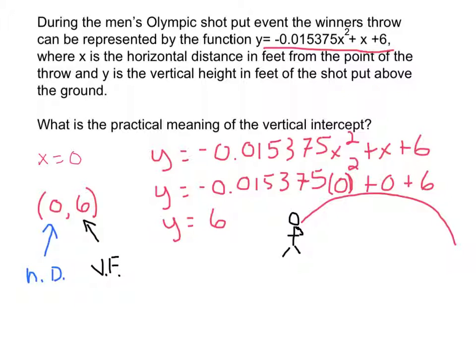So we look here, and at 0 distance, so it's been nothing horizontally. So right there, it's 6 feet off the ground. So right as he's throwing it, right before he throws it, if you will, before it goes anywhere horizontally, it's 6 feet off the ground. And that's our answer.